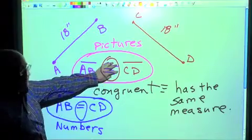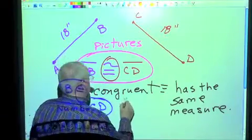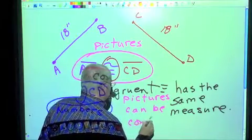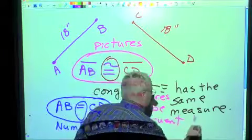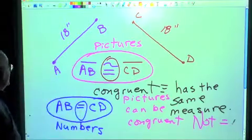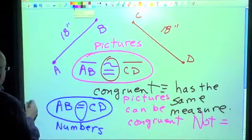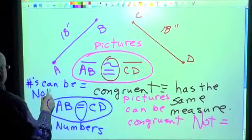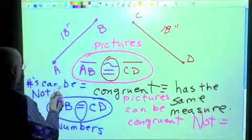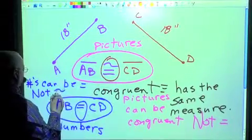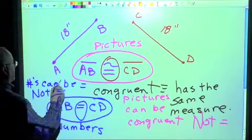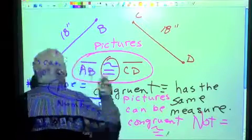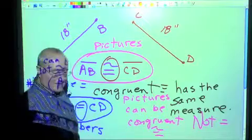It's very important to understand this. Pictures can be congruent — not equal. Numbers can be equal — not congruent. How you write this is like a new language; it tells me what's going on. These are very important concepts.